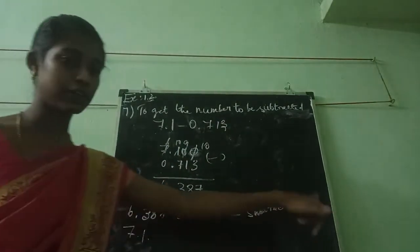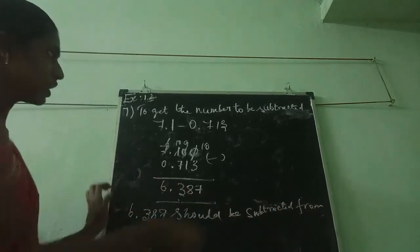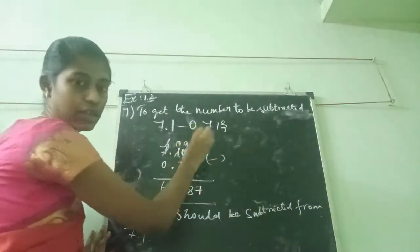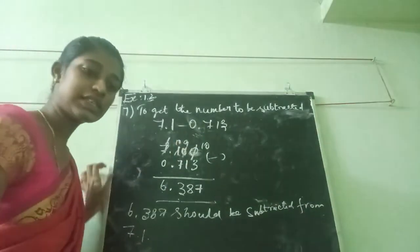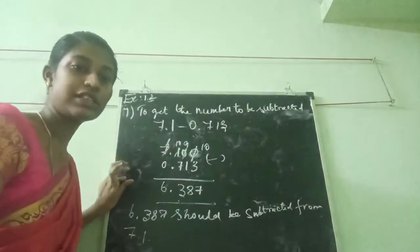6.387 should be subtracted from 7.1, and we get this answer. This is the 7th sum answer. All of you understand?